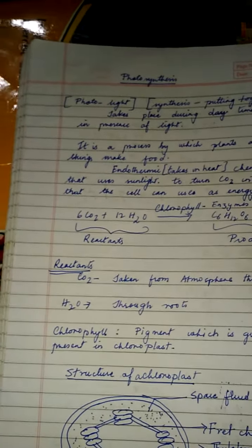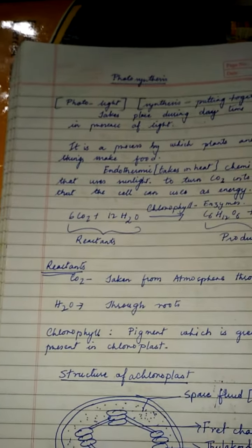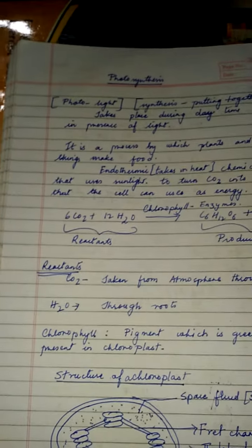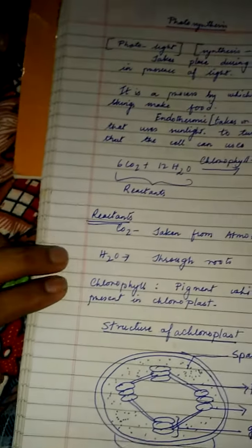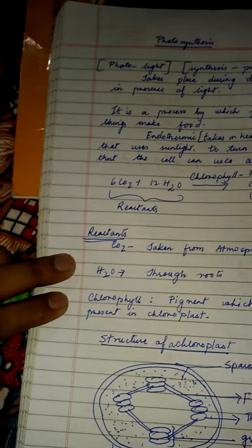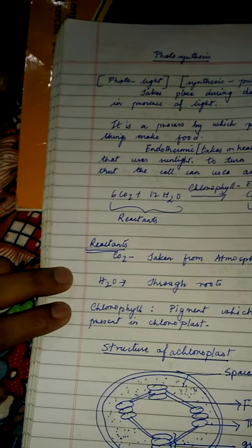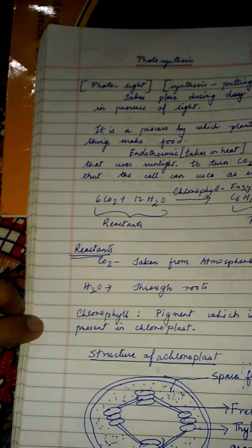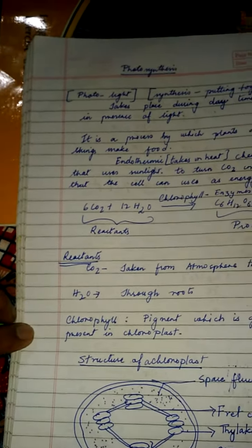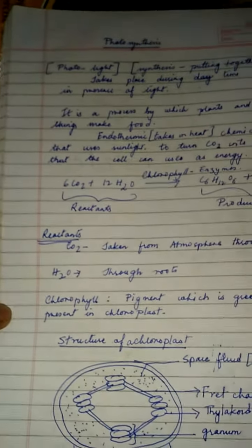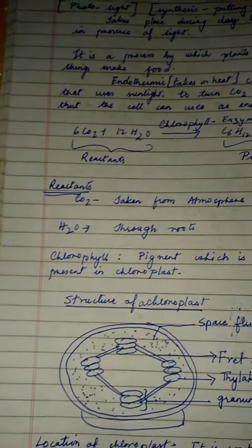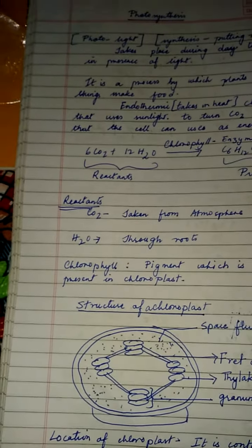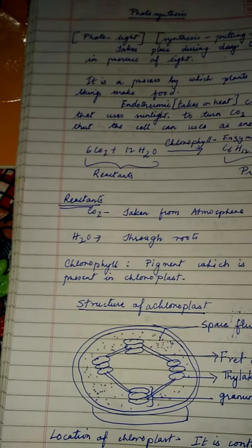Today we are going to learn about the reactants and the products. The reactants are: carbon dioxide, which comes from the atmosphere through stomata; water, which comes through the roots; and chlorophyll, the green pigment present in the chloroplast.